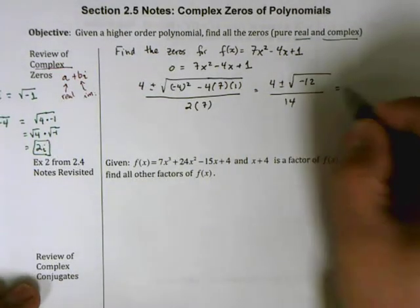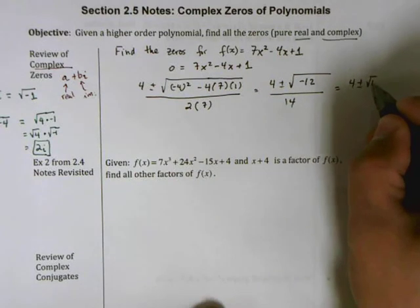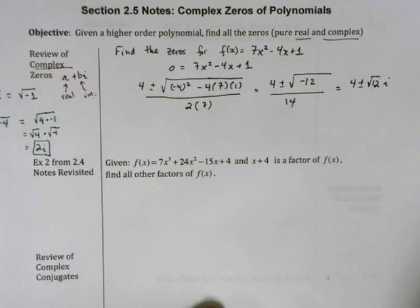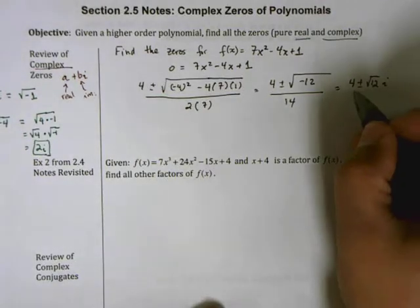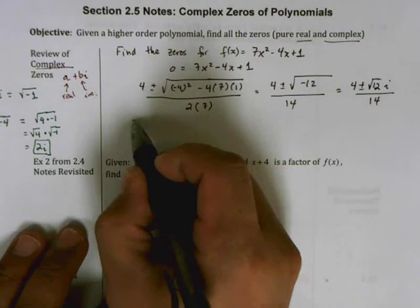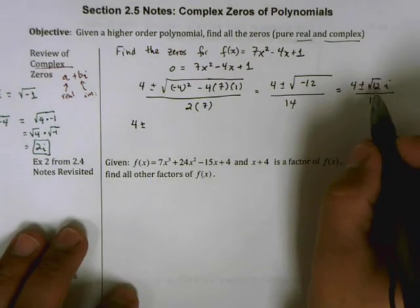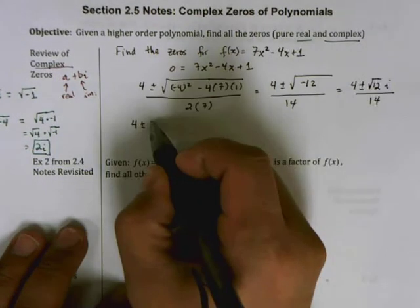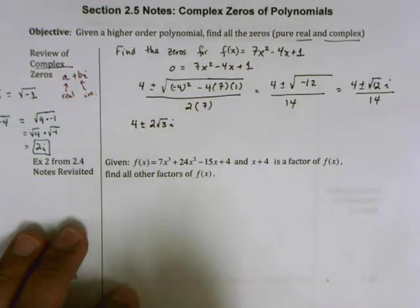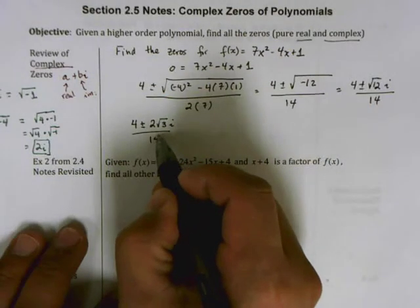This is where the imaginary components come in. I'm going to do some simplification here, so this is 4 plus or minus the square root of 12 times i—that's how I get rid of the negative—divided by 14. And 12 can be simplified further: this is 4 plus or minus, 12 is 4 times 3, so this is 2√3 times i, divided by 14.